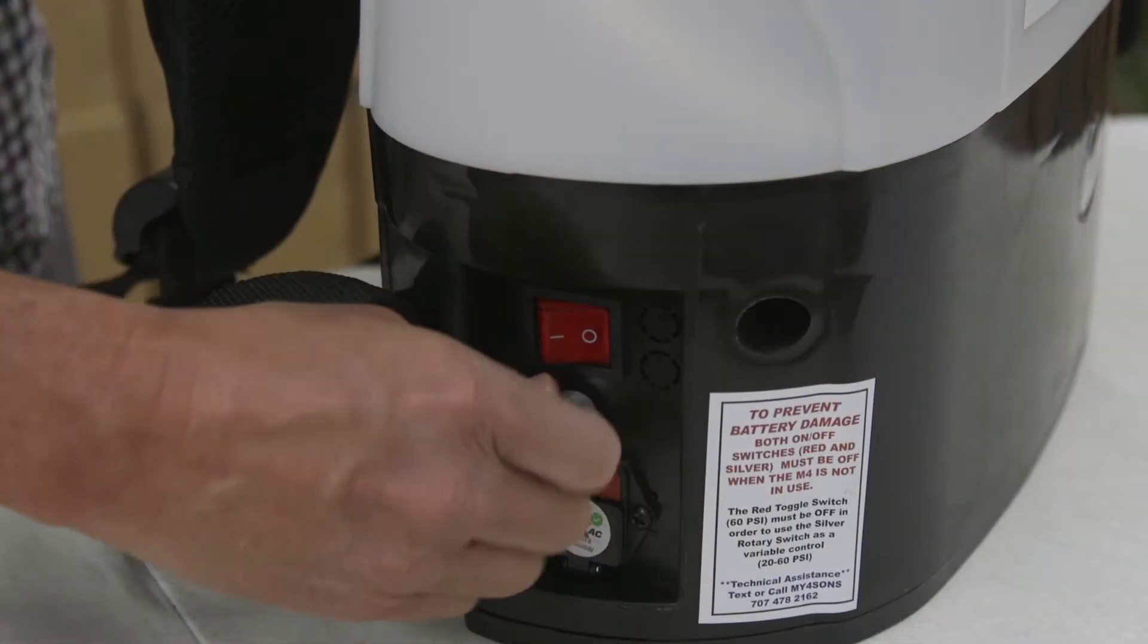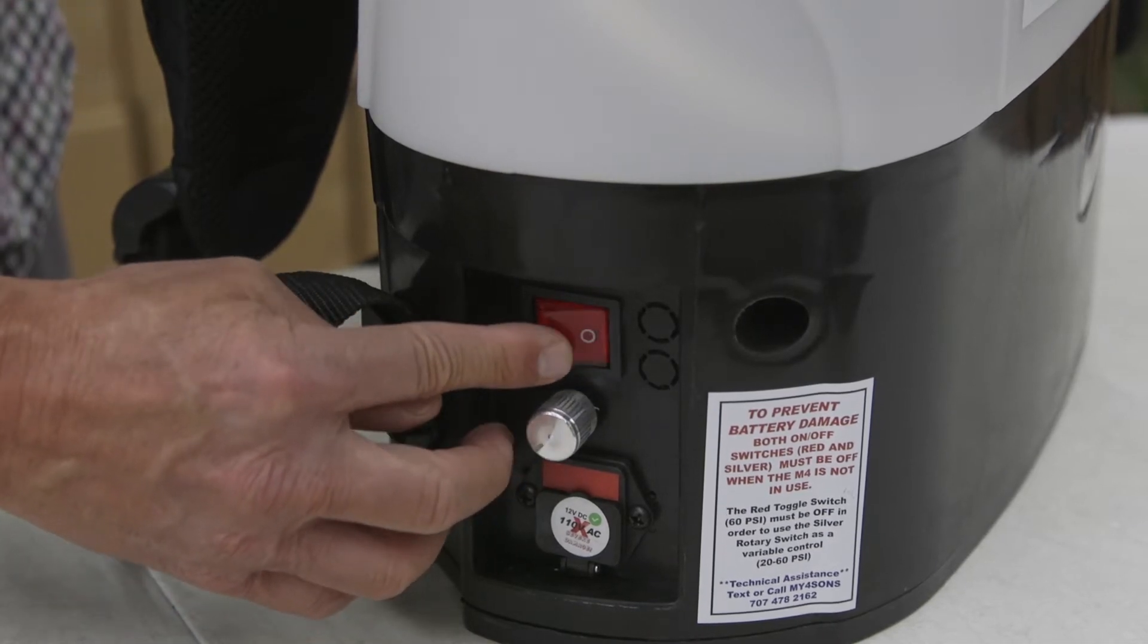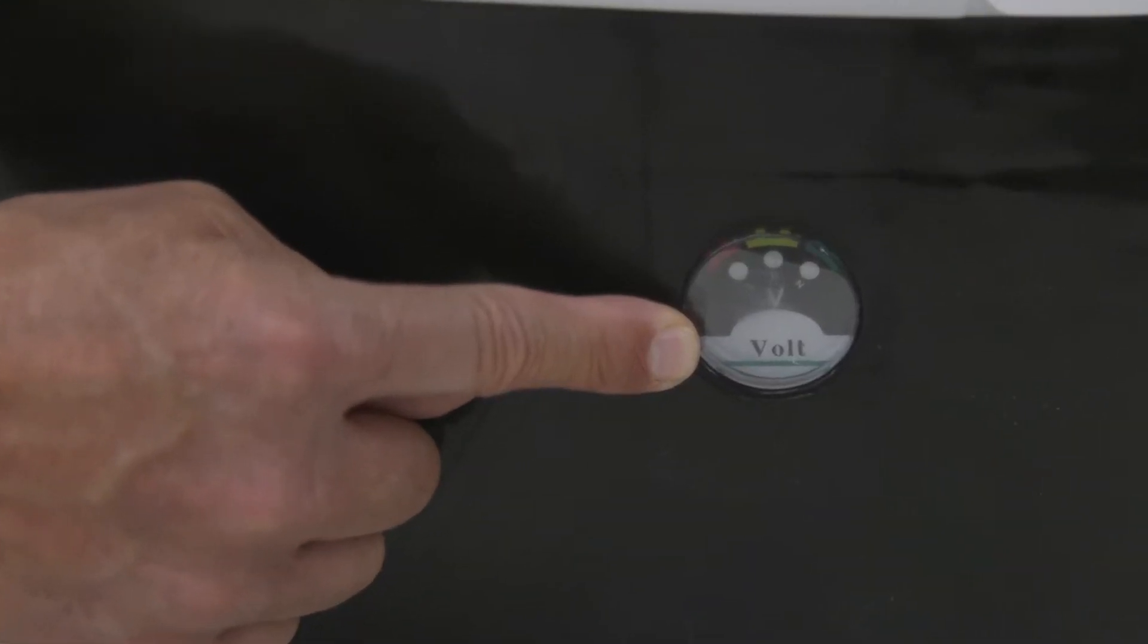This is Lance at the My Four Sons Warehouse. Today we're going to talk about what happens if you don't get power from your M4 when you turn on either switch and when you see no voltmeter light come on.